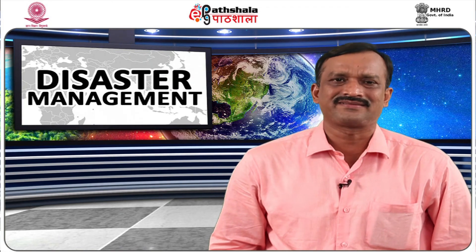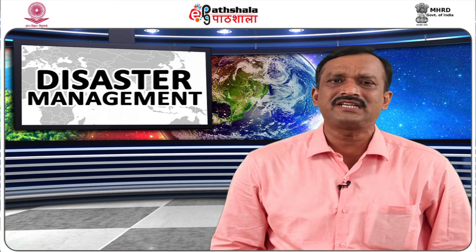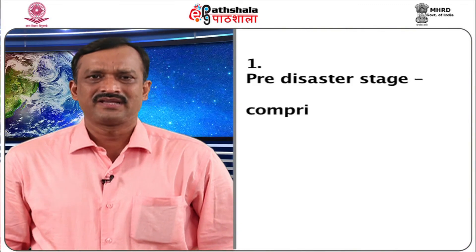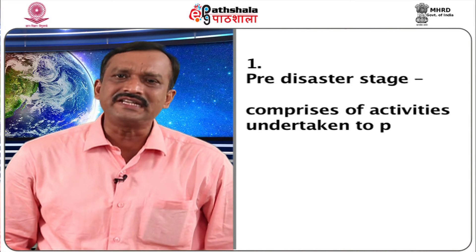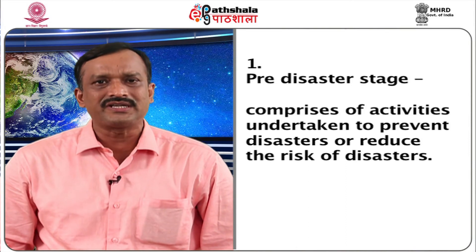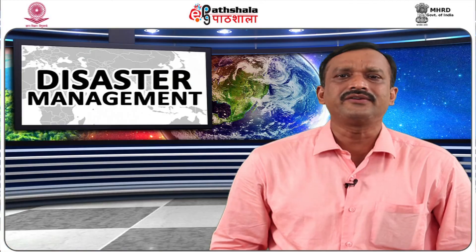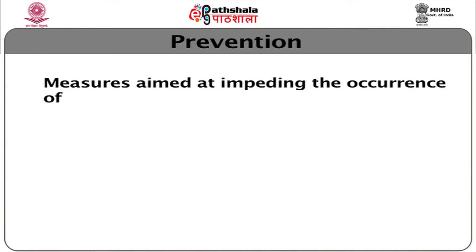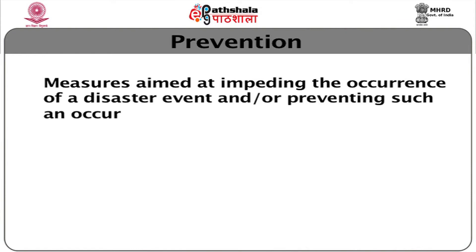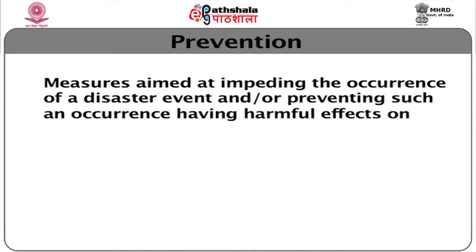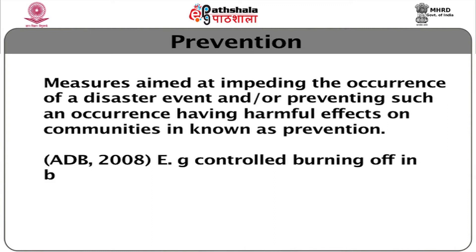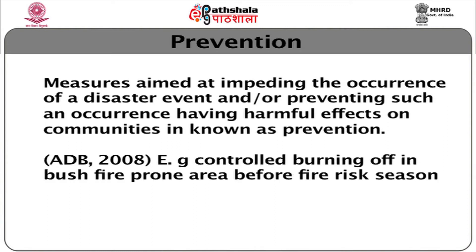The following diagram indicates that disaster management involves three key stages of activities. Number one is the pre-disaster stage, which comprises activities undertaken to prevent disasters or reduce the risk of disasters. It involves prevention — measures aimed at impeding the occurrence of a disaster event and/or preventing such an occurrence having harmful effects on communities. Example: controlled burning off in bush fire-prone areas before fire season.